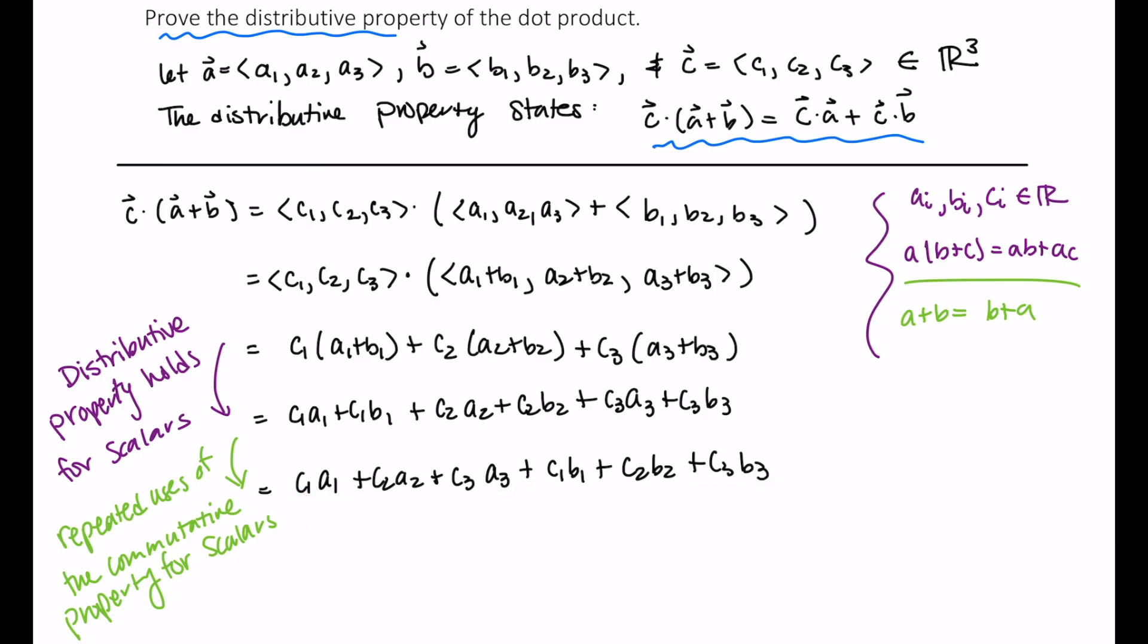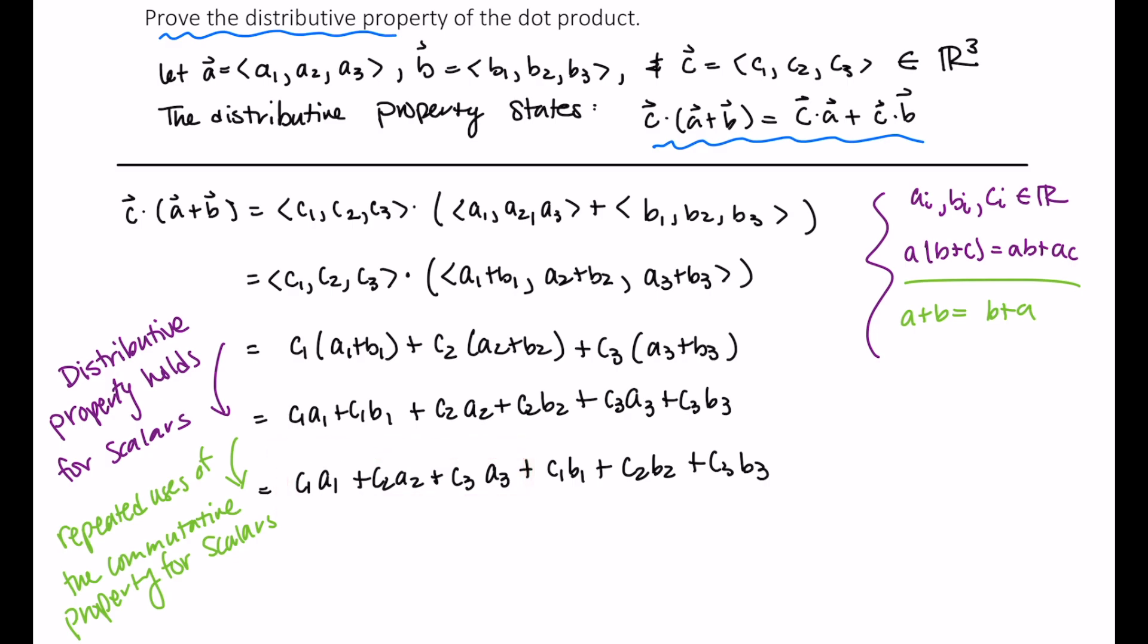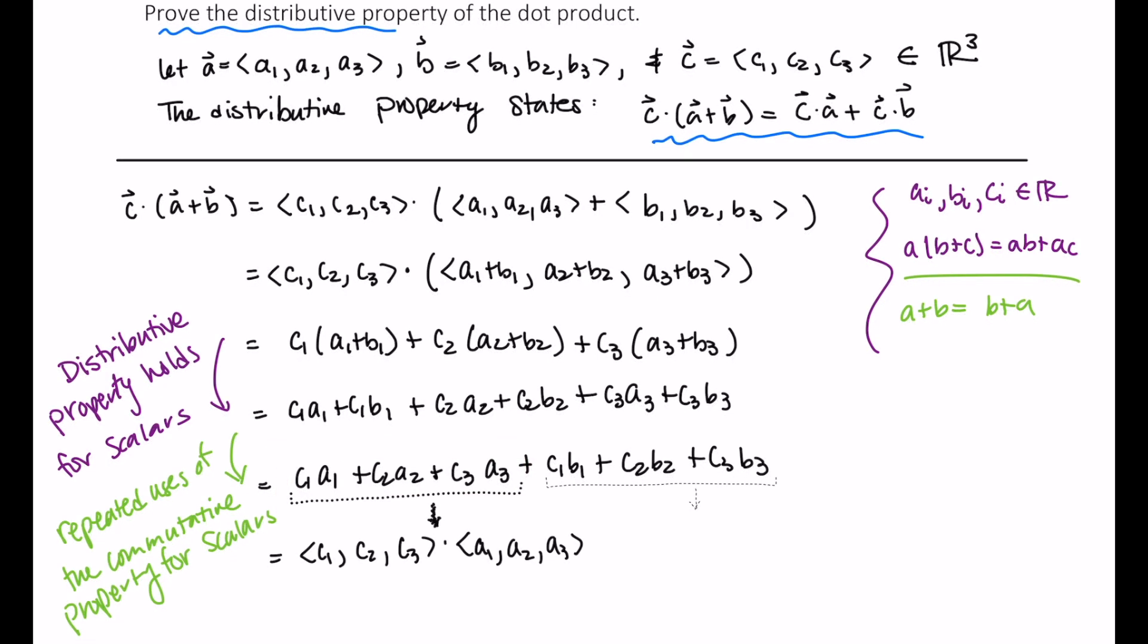Well, why would I do that, you may ask? Well, here, this is just the dot product of vector C and vector A. This is just the dot product between C and B. I can rewrite this as vector C dot vector A plus vector C dot vector B. And there you are. We started with C dot A plus B, and we ended with C dot A plus C dot B, which is exactly what we wanted to show here.